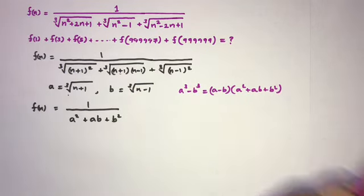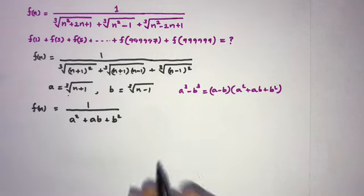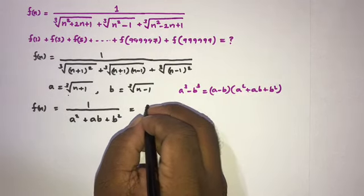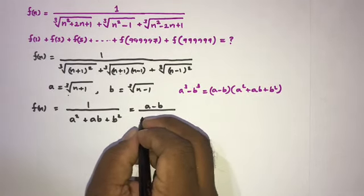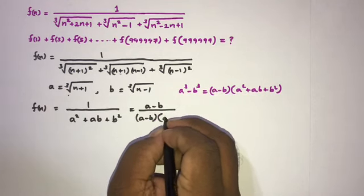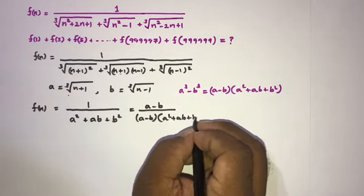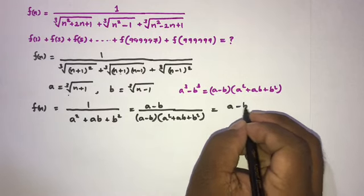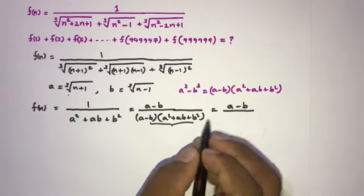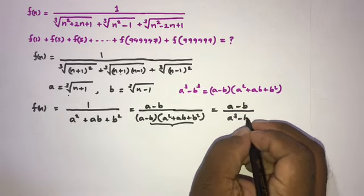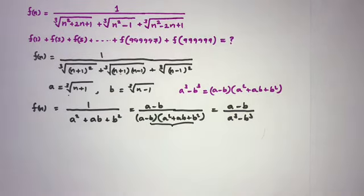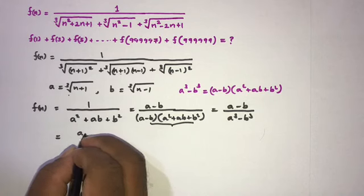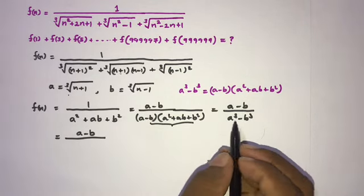We know the formula: a³ - b³ = (a - b)(a² + ab + b²). Therefore, I am going to multiply both numerator and denominator by (a - b). This gives us (a - b) over (a - b)(a² + ab + b²), and the denominator becomes a³ - b³.